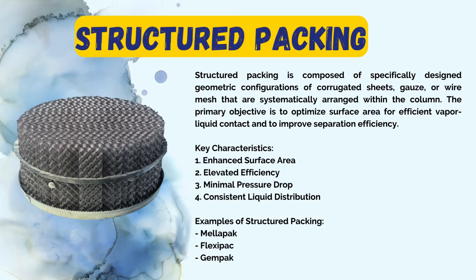The characteristics of structured packing are: first, high surface area — structured packing provides a higher surface area per unit volume, promoting efficient mass transfer between the vapor and liquid phases. Second, high efficiency — due to its organized structure, it typically offers higher separation efficiency compared to random packing. Third, low pressure drop — it is designed to maintain a relatively low pressure drop across the column. Fourth, uniform liquid distribution — the structured arrangement helps ensure even liquid distribution over the packing surface.